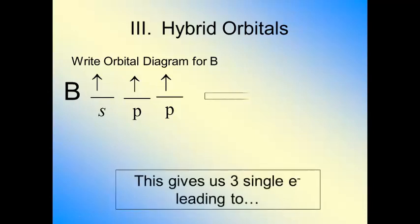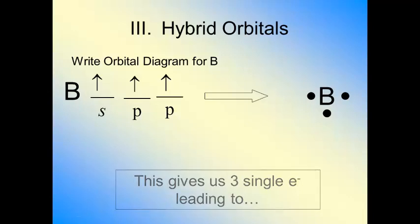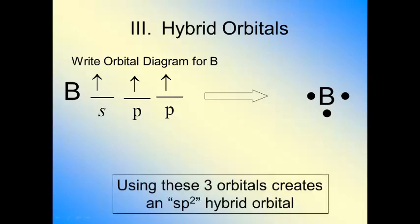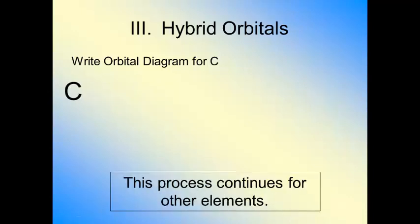This is going to lead us to three single dots on our Lewis symbol like we know boron is supposed to have, giving us our three bonds for compounds like boron trifluoride, BF3. This now uses one s orbital and two p orbitals, forming what's called an sp2 hybrid orbital. Let's just keep going.